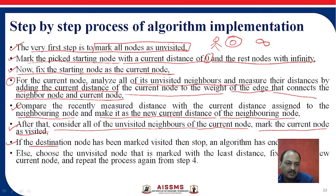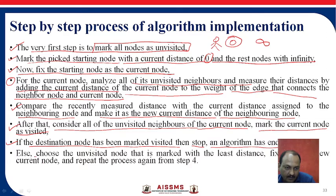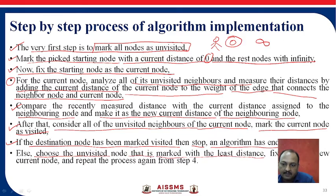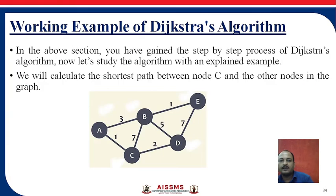Consider all unvisited neighbors of the current node and then mark that current node as visited. If the destination node has been marked as visited, stop — the algorithm has ended. Otherwise, choose the unvisited node that is marked with the smallest distance, fix it as the new current node, and repeat the process again from step 4. Let us start with a working example of Dijkstra's algorithm.